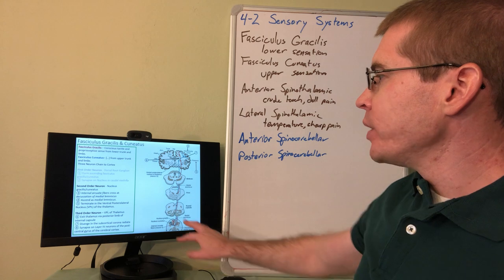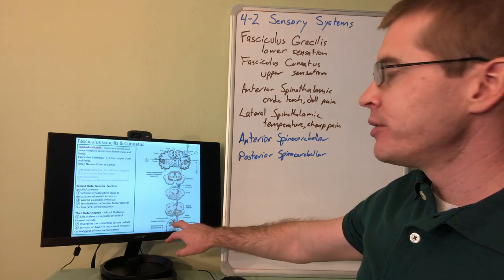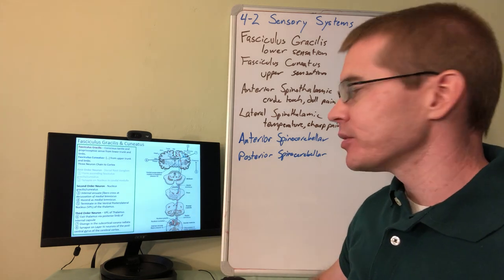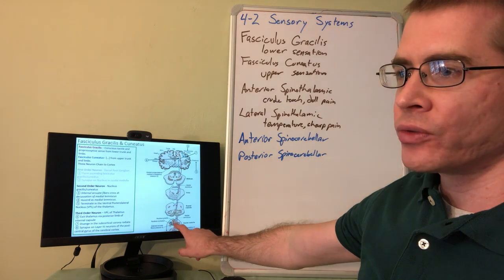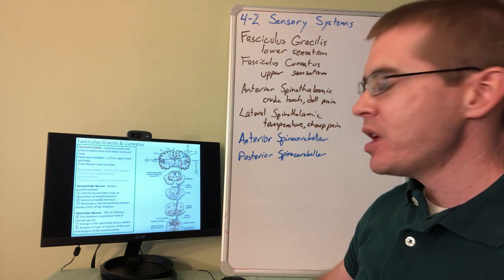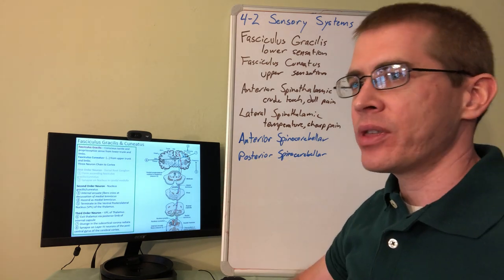So now we're following that second order neuron, which was originated in the gracilis and cuneatus nuclei as it ascends into the thalamus. So those fibers from the cuneatus gracilis nuclei crossed at the level of those nuclei and then ascended to the thalamus.